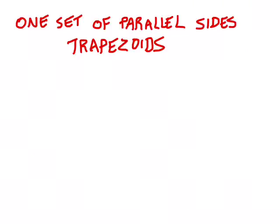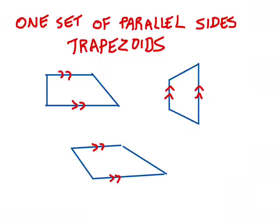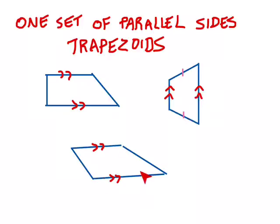Moving on — there are quadrilaterals that have one set of parallel sides, and those are always going to be trapezoids. There are different types of trapezoids: some might have right angles, some might have obtuse angles, and some might have congruent opposite sides. But we don't really have to worry about that right now. All you need to know is that if you see exactly one set of parallel sides, that is a trapezoid and nothing else.